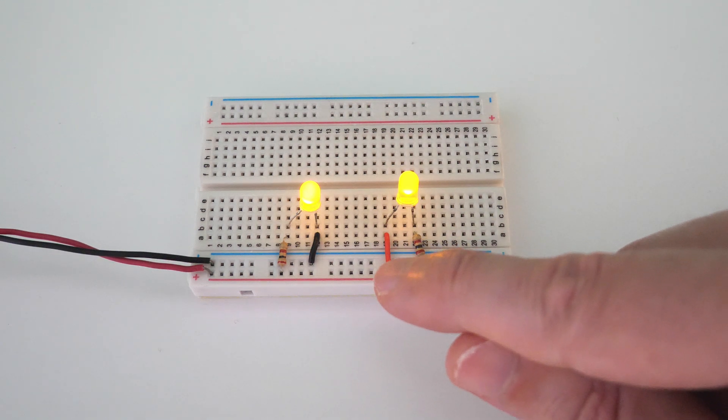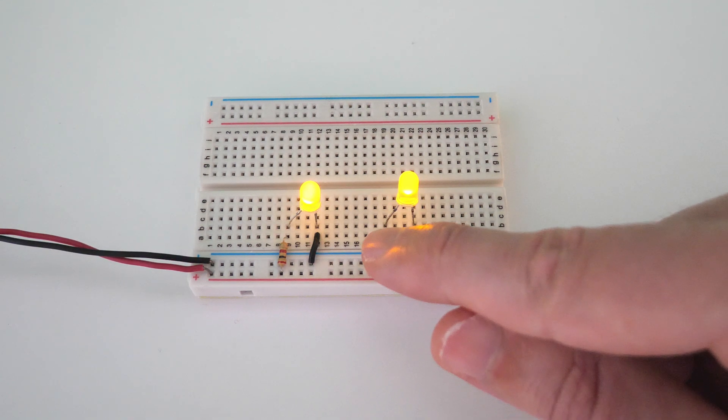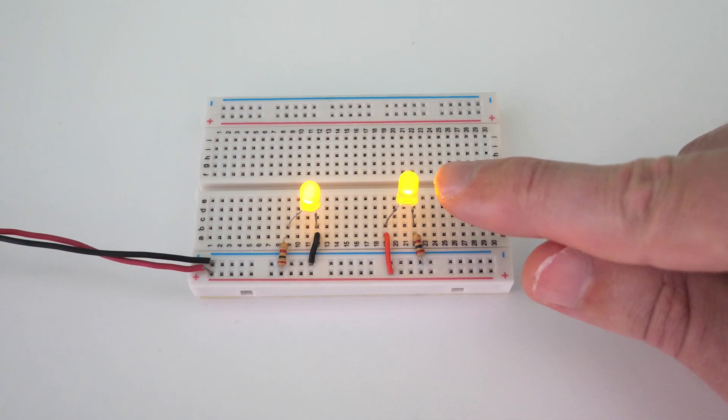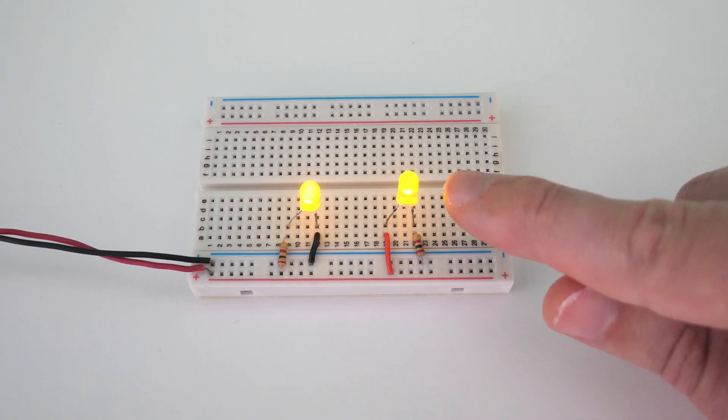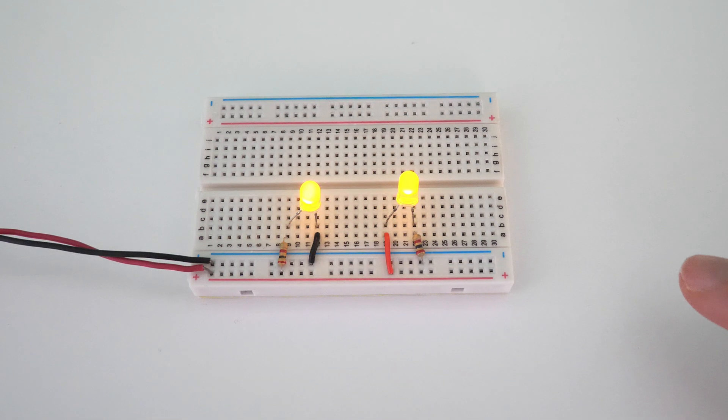Some people might think that if you see that the voltage right here is going directly into this LED, so it's going to burn it up. And that is not the case. Regardless of the position of the current limiting resistor, the voltage drop across this yellow LED is going to be the same. And the current through both of the circuits is going to be the same.